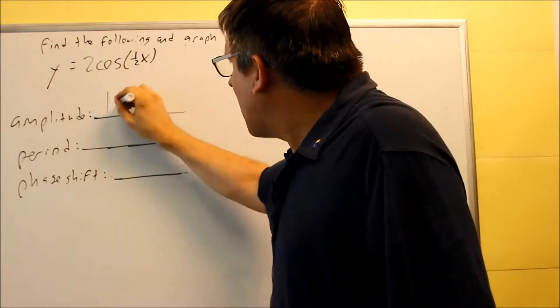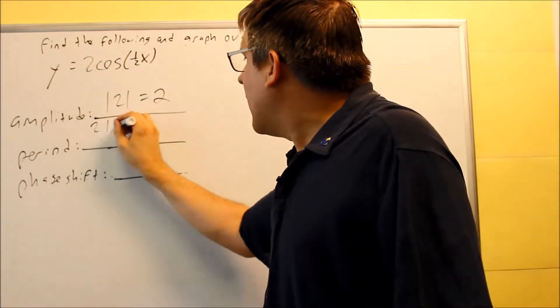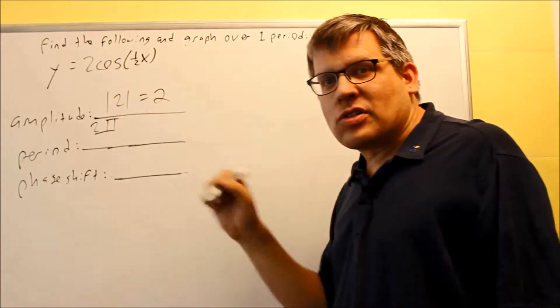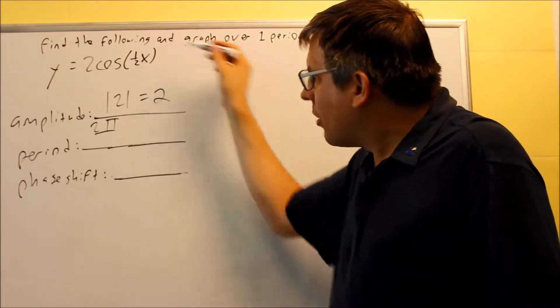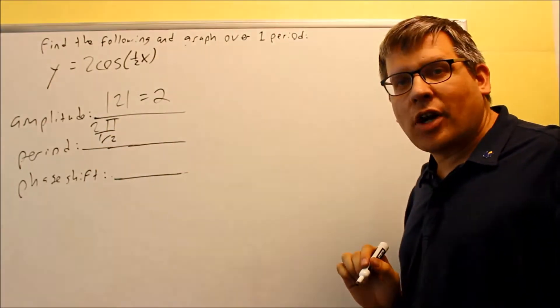Your amplitude is going to be the absolute value of 2, which is 2. Your period is 2π divided by the number in front of the x. It's not going to be 1 this time. The number in front of the x is actually going to be 1 half. So I have 2π divided by 1 half.